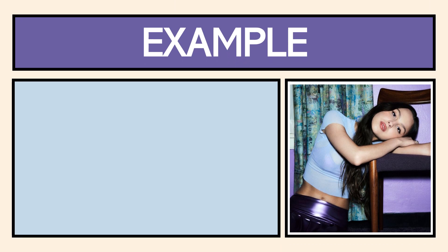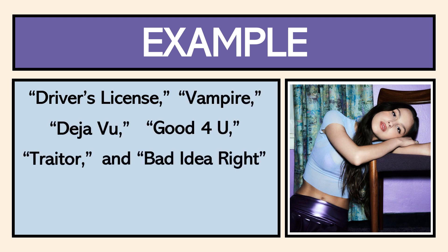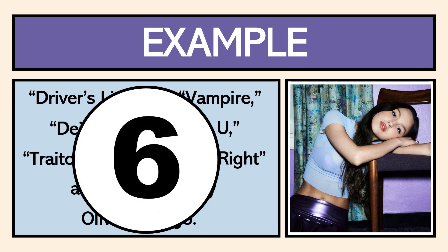However, if we increase the number of subjects it gets harder to read: 'Driver's License, Vampire, Deja Vu, Good For You, Traitor, and Bad Idea are Top 10 Hits by Olivia Rodrigo.' When we have six subjects, there's a lot of information for the reader to hold on to, and that impedes readability because they have to hold on to and remember all of the nouns before categorizing them through the action.